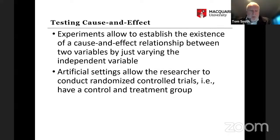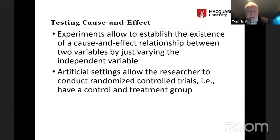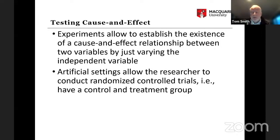You give the control group the placebo and you give the treatment group the actual medicine or actual treatment, and that way you're able to see the effect because you are varying the independent variable. The artificial setting of a laboratory allows you to conduct a randomized control trial with a control group and a treatment group — something not easily done with standard empirical work.